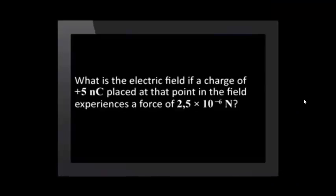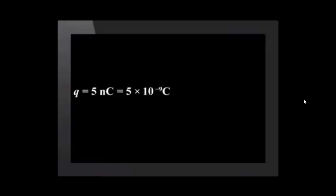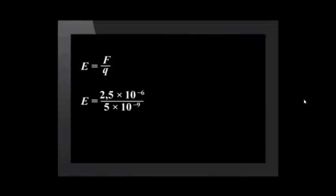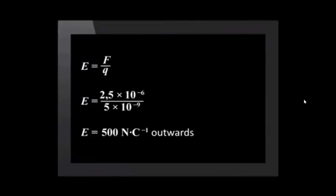What is the electric field if a charge of positive 5 nanocoulombs placed at that point in the field experiences a force of 2.5 times 10 to the minus 6 newtons? Let us start by making a list of known values. Charge is 5 nanocoulombs, which converts to 5 times 10 to the minus 9 coulombs. Force is 2.5 times 10 to the minus 6 newtons. We substitute these values into the equation to solve for E. E equals F over Q, which equals 2.5 times 10 to the minus 6 over 5 times 10 to the minus 9. This gives us 500 newtons per coulomb. The direction of the electric field is the same as the direction of the field lines. This is a positive charge, so the direction of the electric field is outwards, away from the charge.